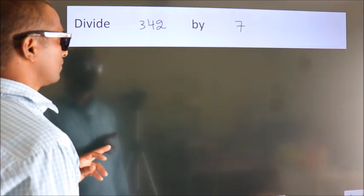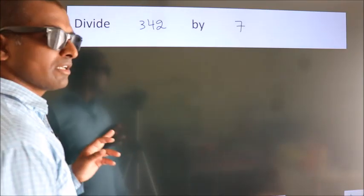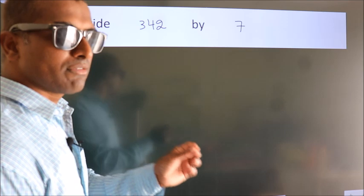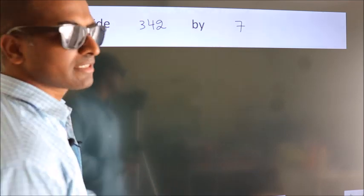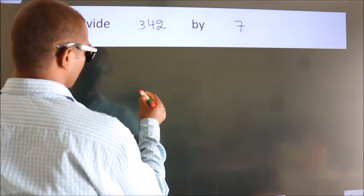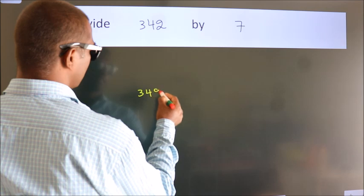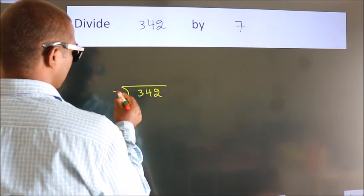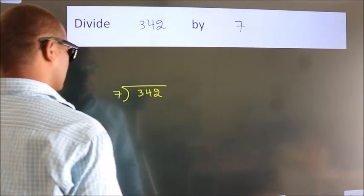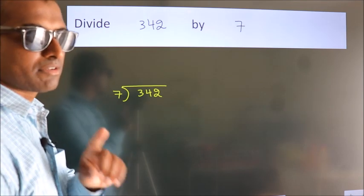Divide 342 by 7. To do this division, we should frame it in this way. 342 here, 7 here. This is your step 1.